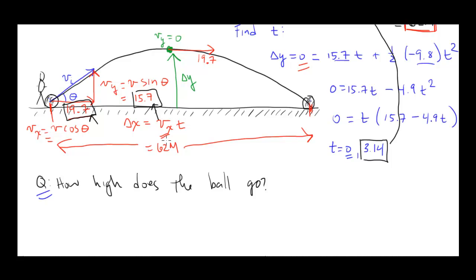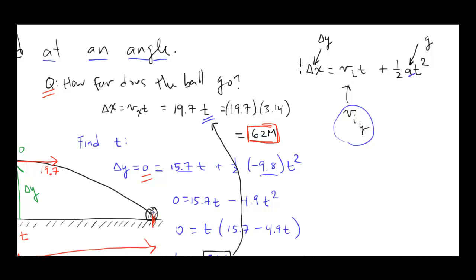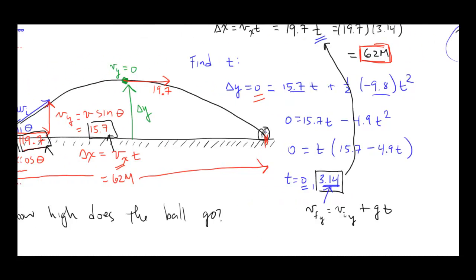How would we do this? Your first instinct might be, okay, maybe I can figure out the time it takes to get to the top. Which you could. You could figure out the time. It's going to turn out to be exactly half of this time, half of 3.14. So you could use this equation to find time: V final y equals V initial y plus gt. V final is zero, V initial is 15.7 minus 9.8t, and you could find t. You could then plug t into this equation to find delta x. Once you've found that time, you could use this equation again. Plug that t in. You know V initial y, you know t, you know g, and so you could solve it that way. I want to point out that there's a quicker way to do the problem, which is to use this equation.